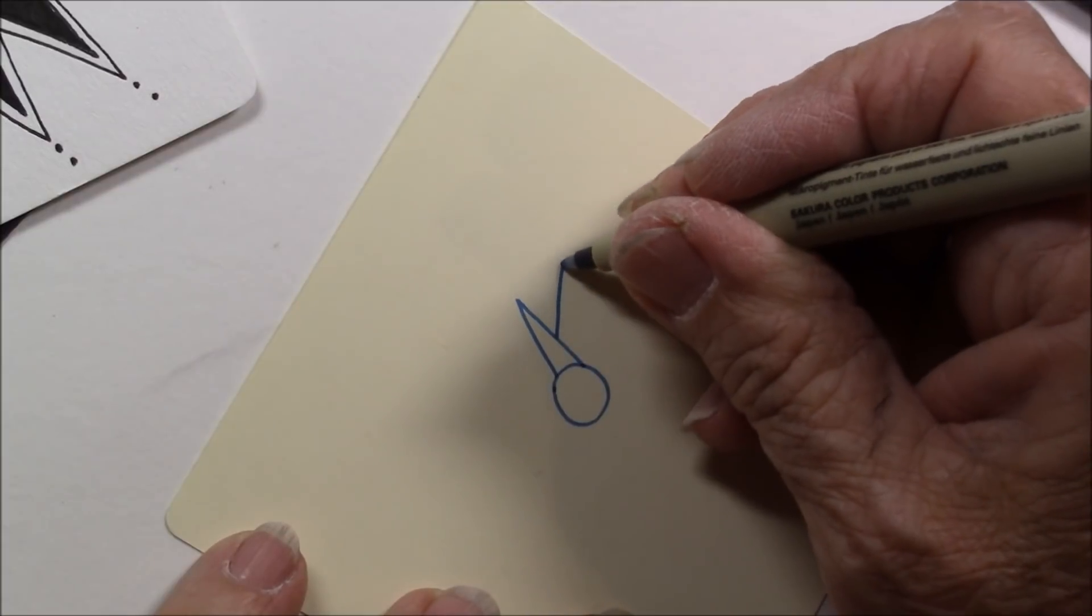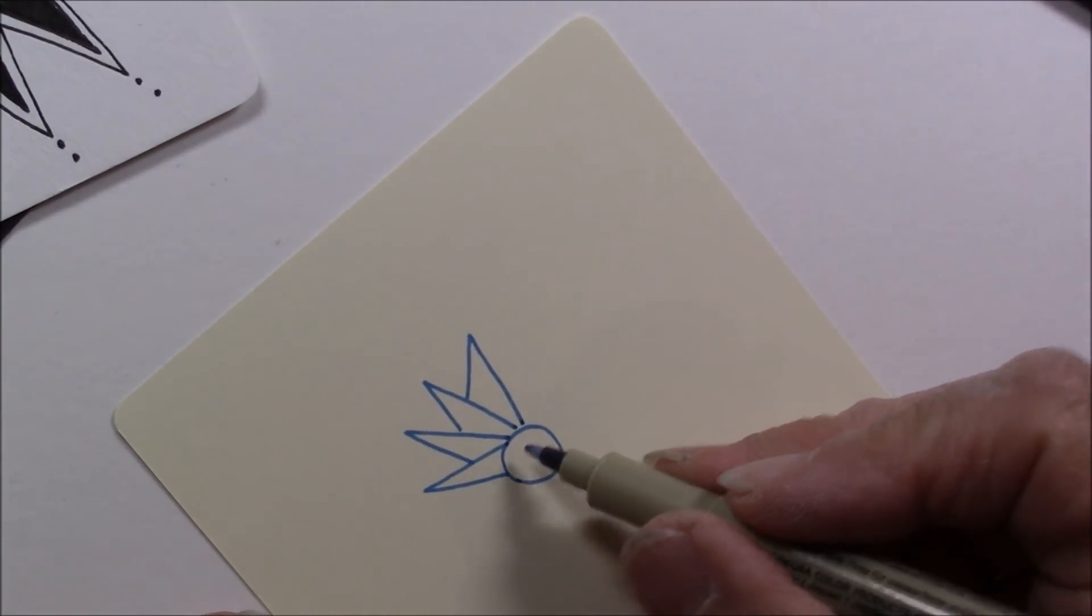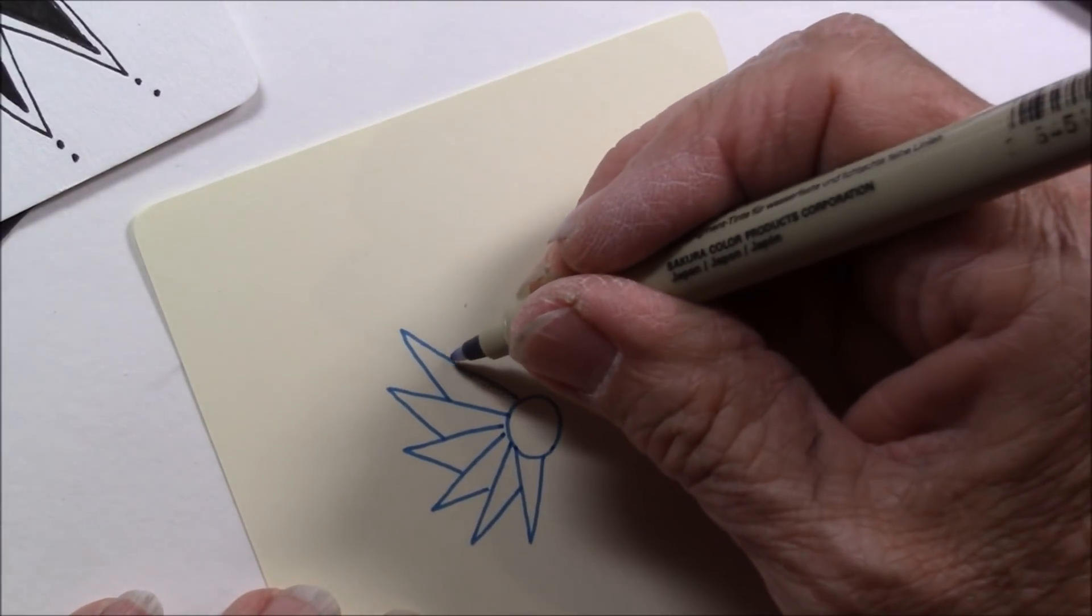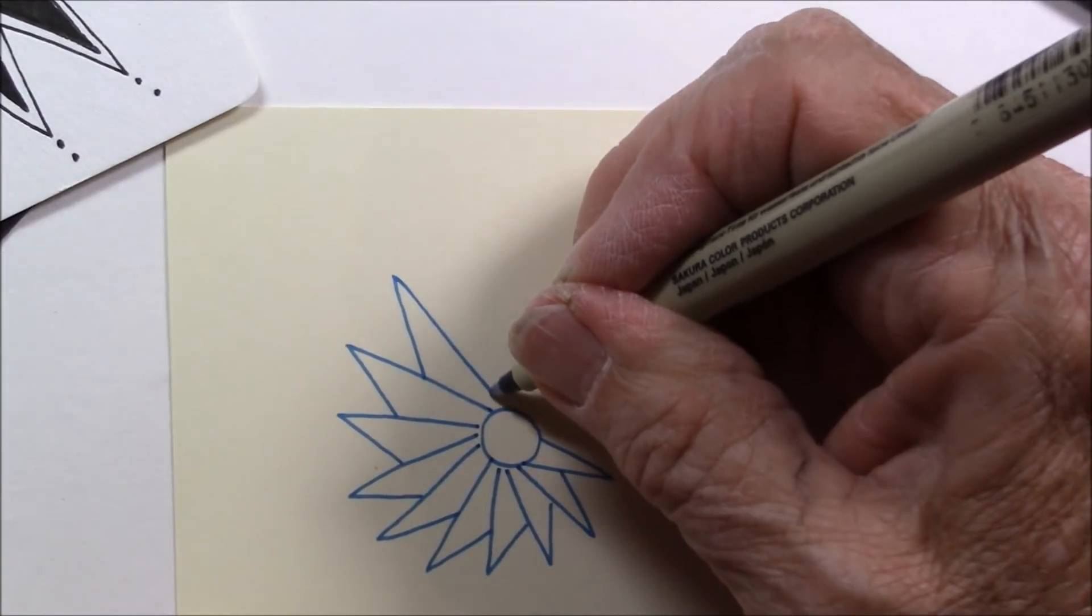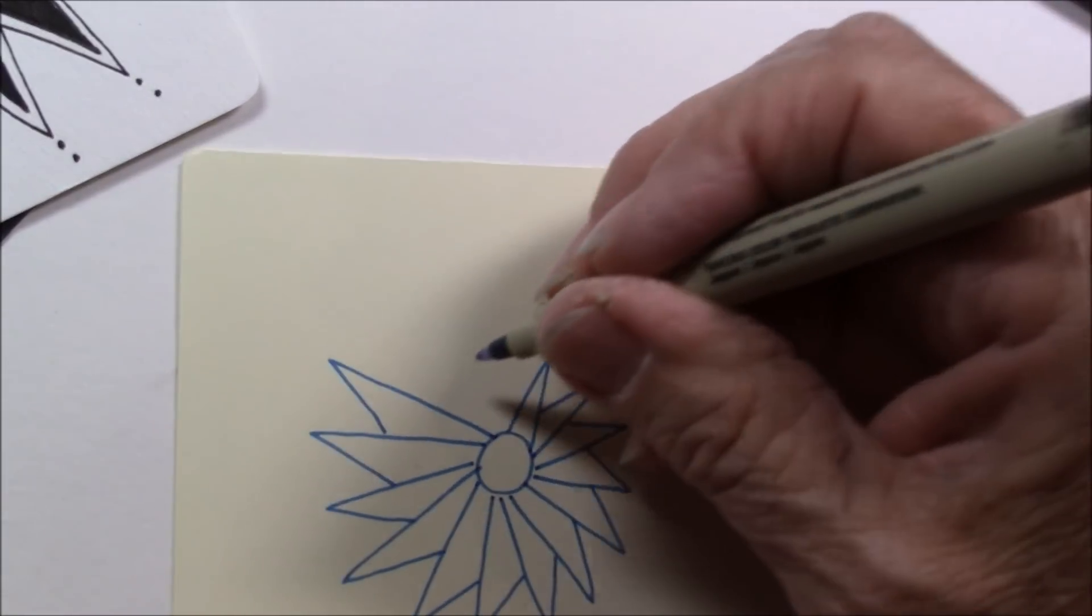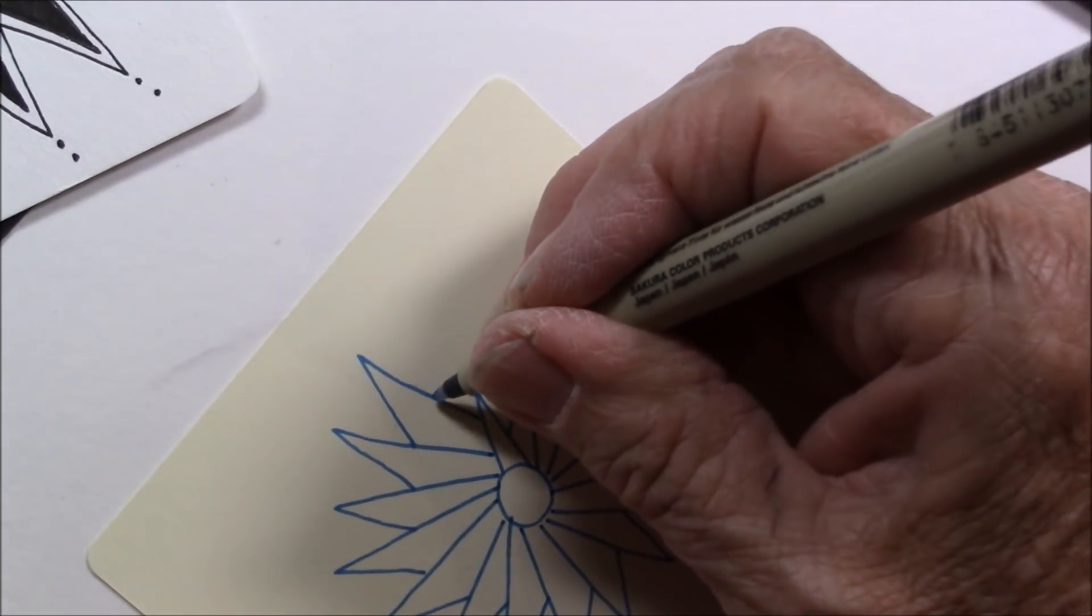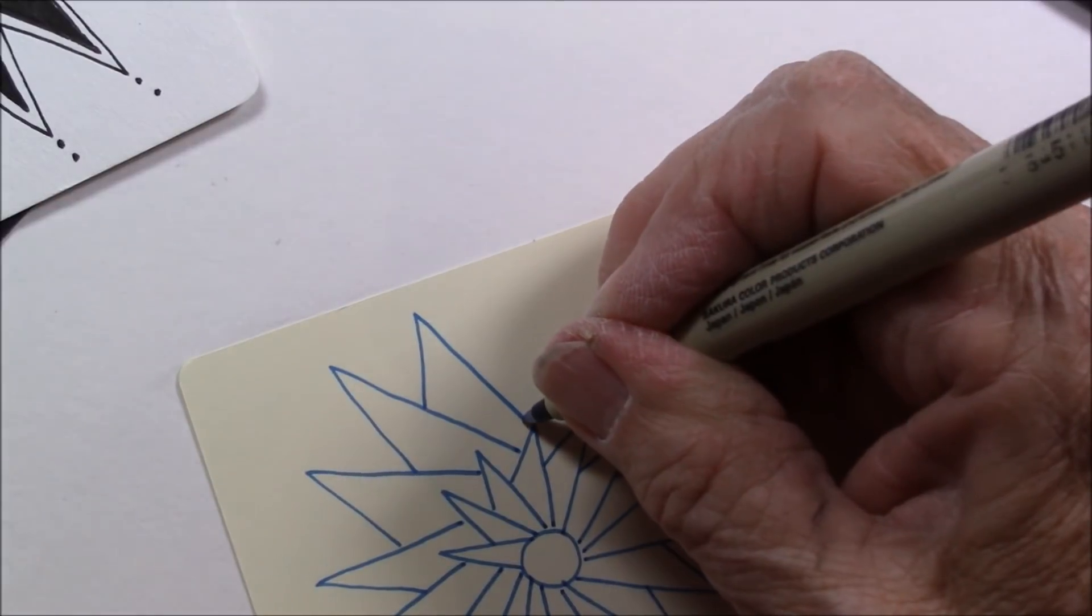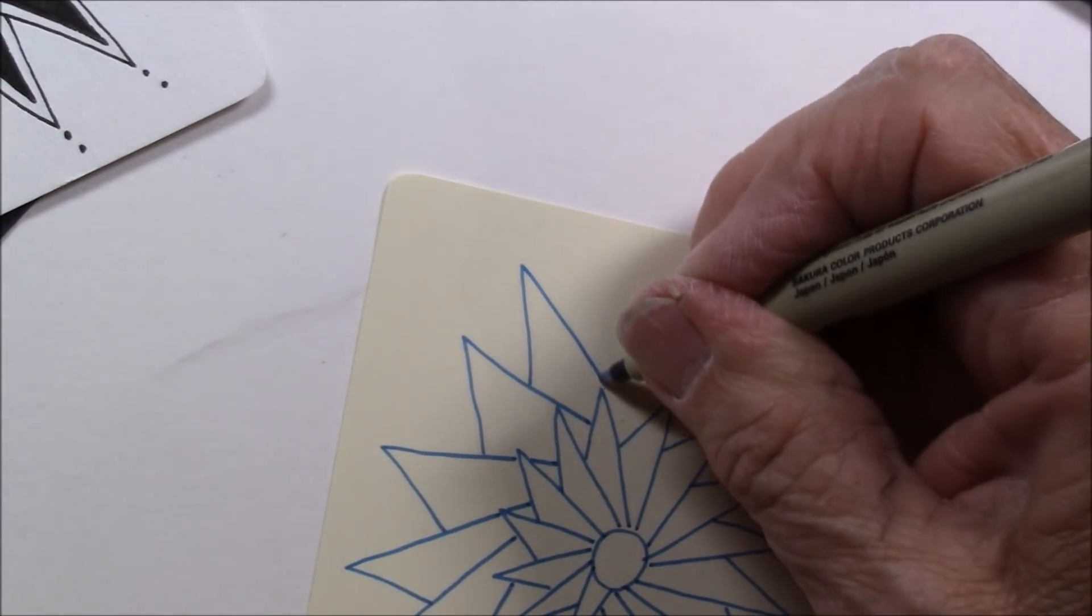And then the next one is going to come underneath, and I try to have them kind of meet down at approximately the same place, and then I because it's a circle, and then I'm going to work my way around the circle and you'll get the feel of it as you do it. Just keep going around.